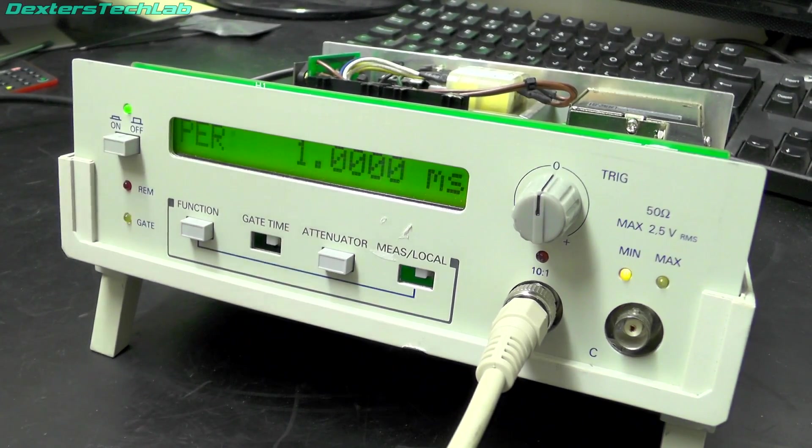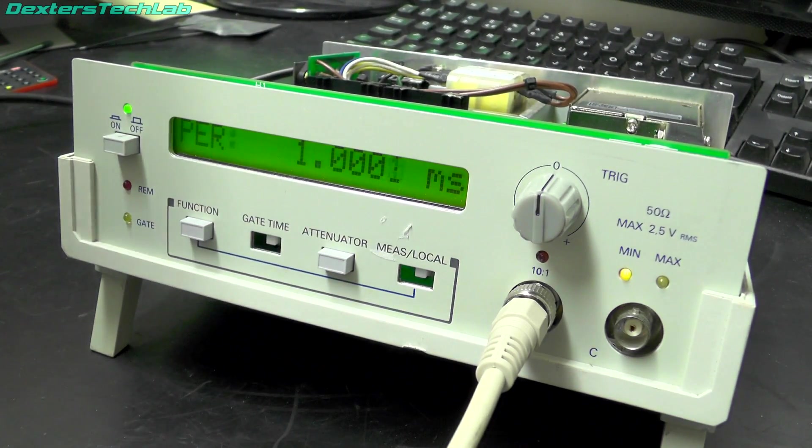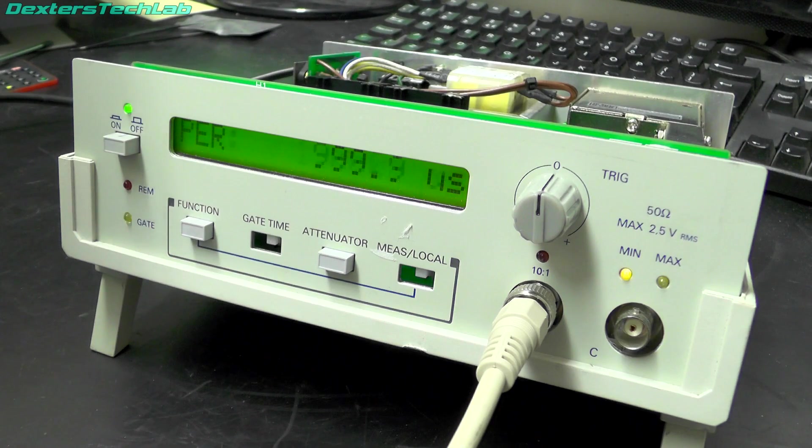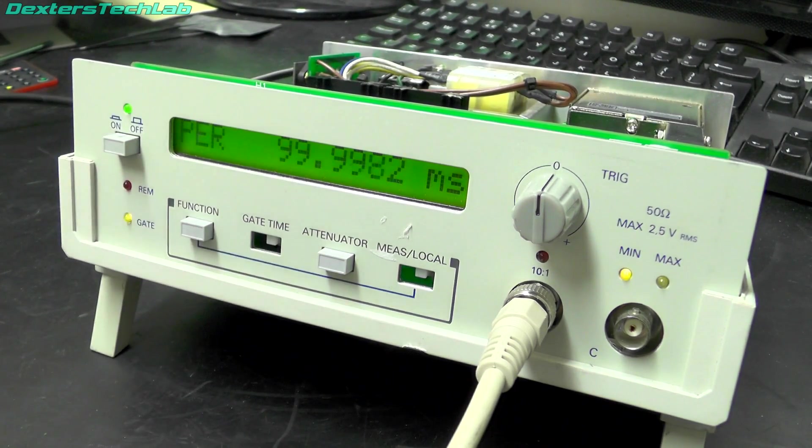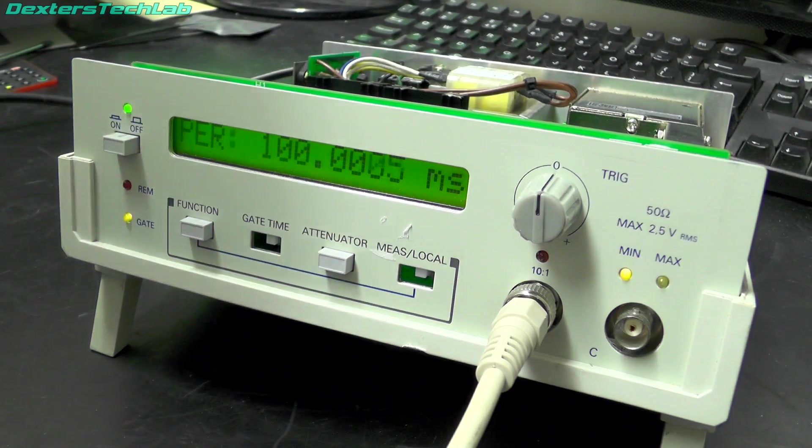So yeah, there's not a huge amount of resolution on the period function. I'm just outputting one millisecond there. So if I change that to 100 milliseconds. Yeah it's a bit up and down there isn't it? I'm not sure how useful that's going to be.